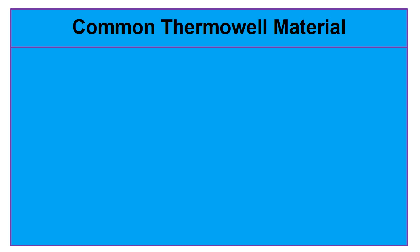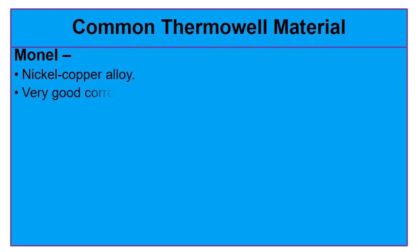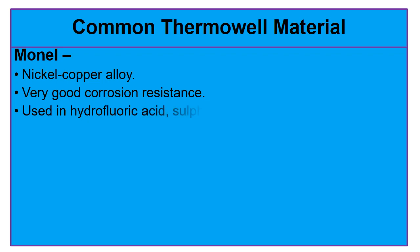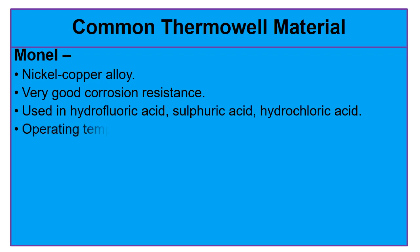The next material is Monel. Monel is a nickel-copper alloy with very good corrosion resistance. It is commonly used to handle seawater, hydrofluoric acid, sulfuric acid, and hydrochloric acid. The maximum operating temperature of Monel is 530 degrees centigrade.